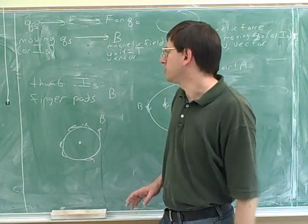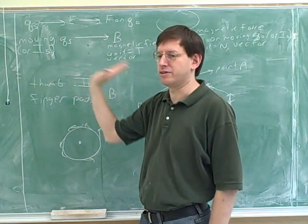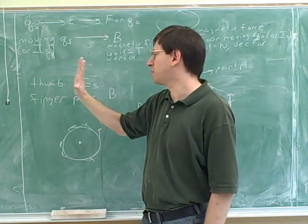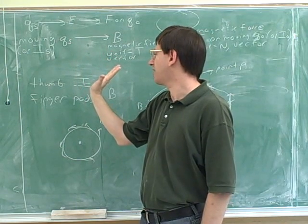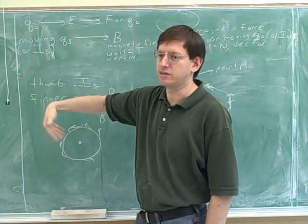So now you can see how you can use your finger pads to trace out the entire circle by rotating it around your thumb. If you keep your thumb pointing in the same direction, you can see here how our finger pads show that the magnetic field lines are tracing out a counterclockwise loop.